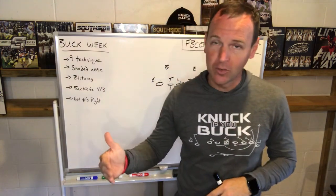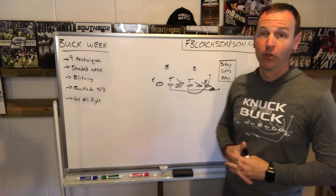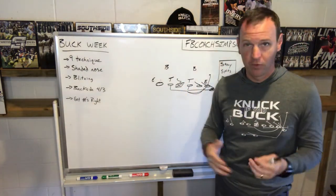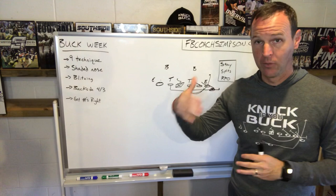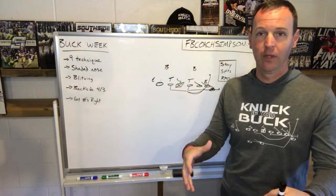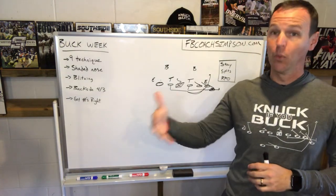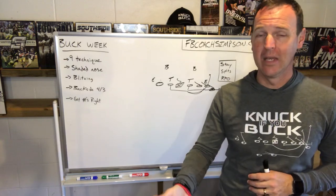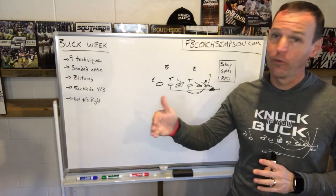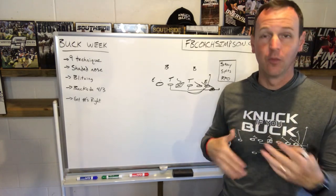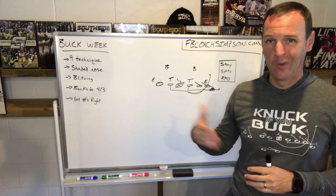Today we're going to talk about handling the blitz running Buck Sweep. There are three different solutions we use when we're seeing teams that are heavy blitzers. First of all, we want teams to blitz. If you're a Wing T team, the first solution you work on is teams that want to blitz, because if you can't answer that, that's what they're going to do all the time. We've gotten to the point where we're pretty good against blitzes because our kids have repped these plays over and over, which comes from being simple in how many plays you run and being really good at those.